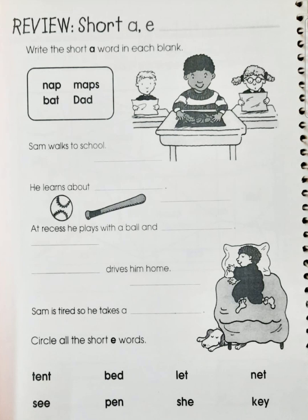First one is TENT — T-E-N-T, tent. Next word is BED — B-E-D, bed. Next word is LET — L-E-T, let. After this, next word is NET — N-E-T, net. Next word is SEE — S-E-E, see. After that, next word is PEN — P-E-N, pen.